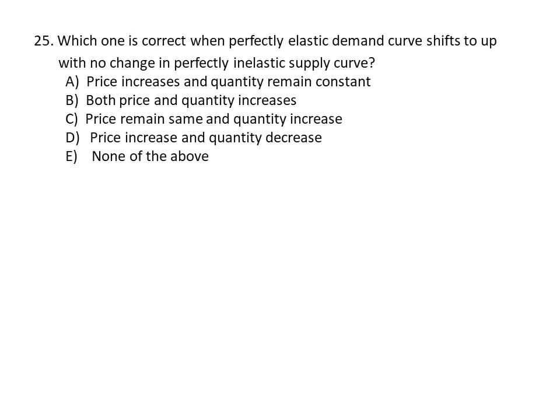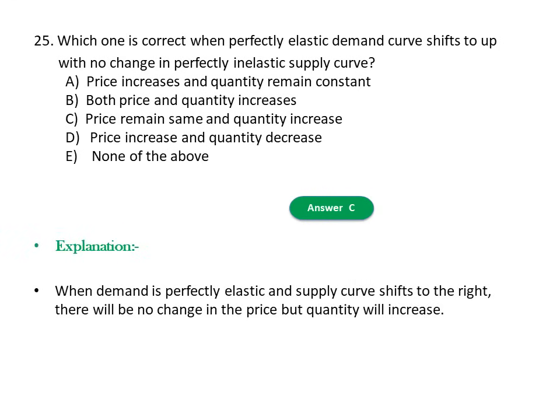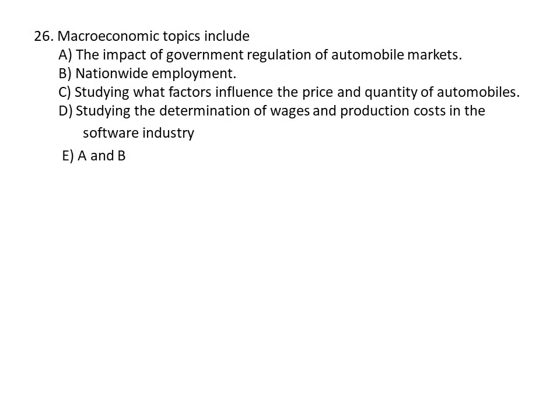Question twenty-five: Which is correct when a perfectly inelastic demand curve shifts upward with no change in a perfectly inelastic supply curve? A) Price increases and quantity remains constant, B) Price and quantity increase, C) Price remains the same and quantity increases, D) Price increases and quantity decreases, E) None. The answer is C — when demand is perfectly elastic and the supply curve shifts to the right, there is no change in price but quantity increases.